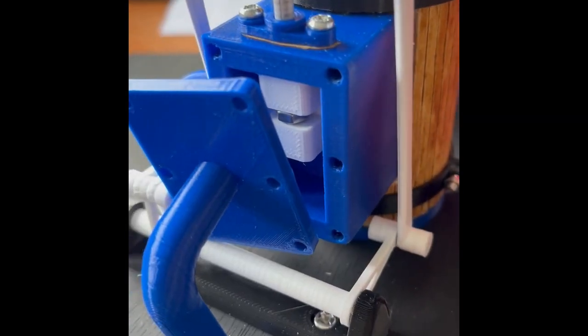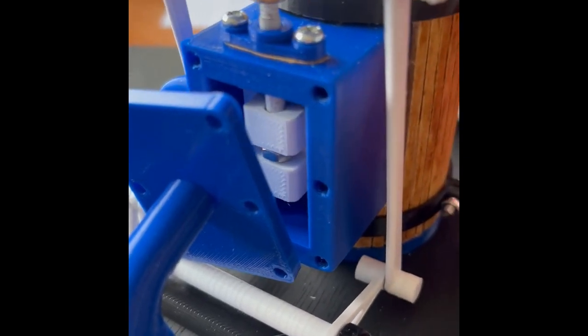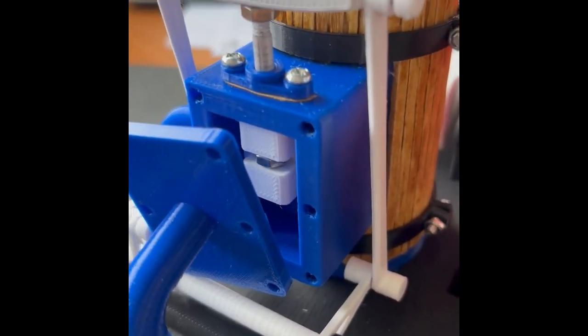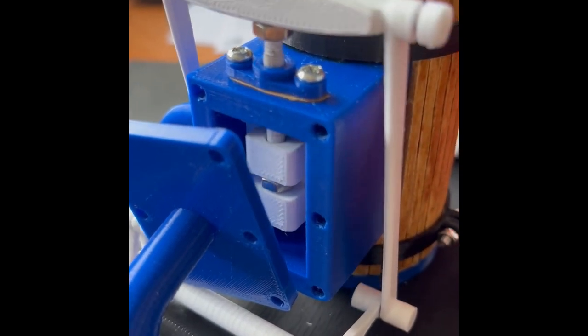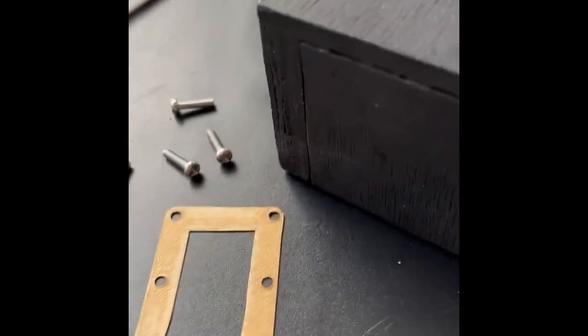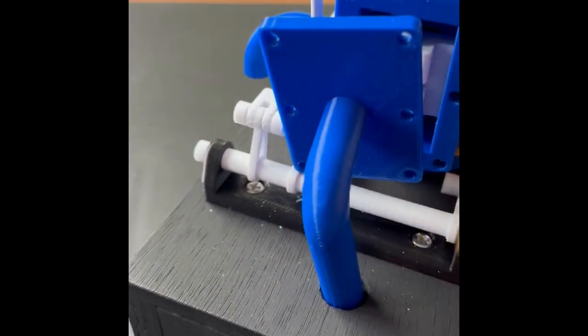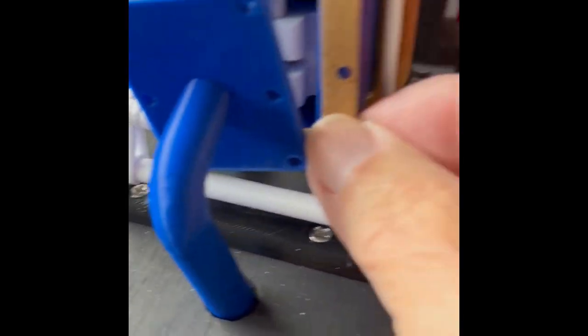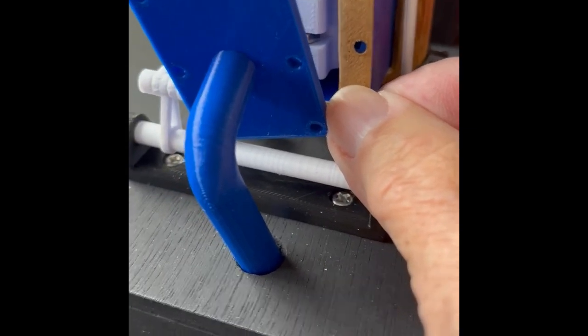This shows you the steam chest with the cover plate removed, just to show you the valve and mechanism as it works up and down. I have used gaskets in order to create a better seal between the cover plate and the steam chest on this occasion. They seem to help, to be honest.